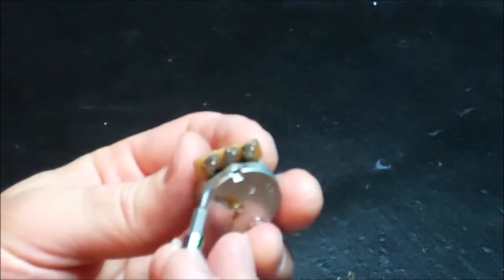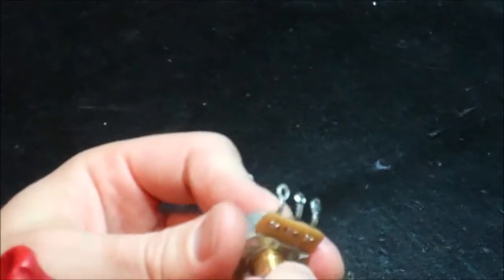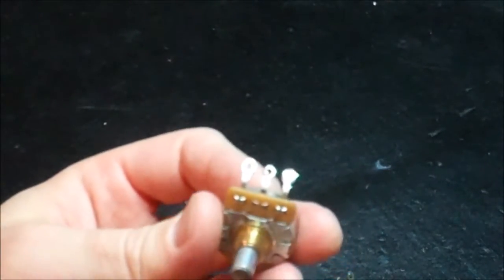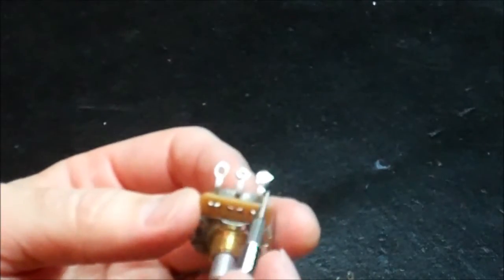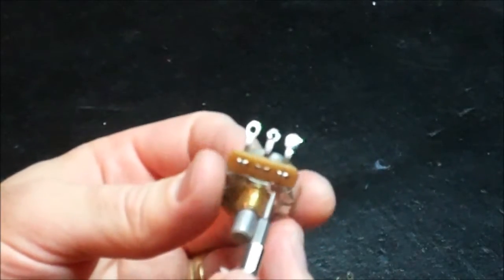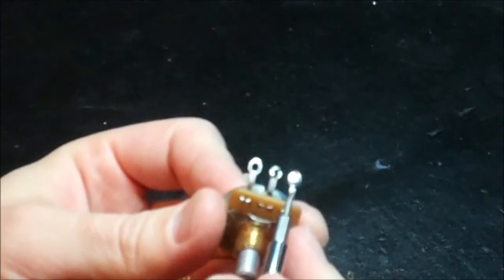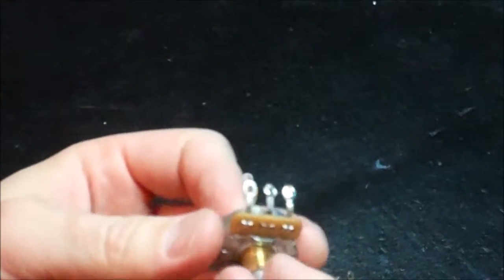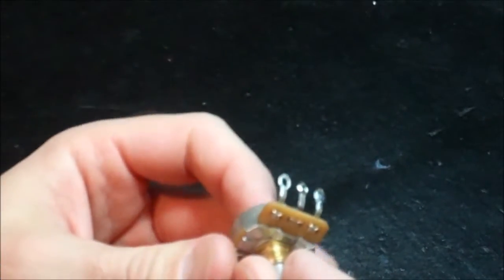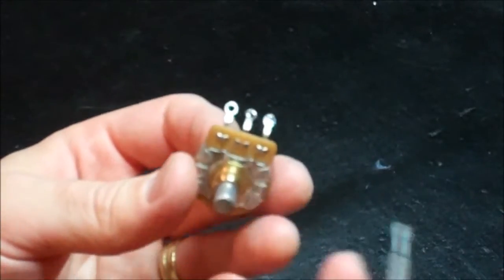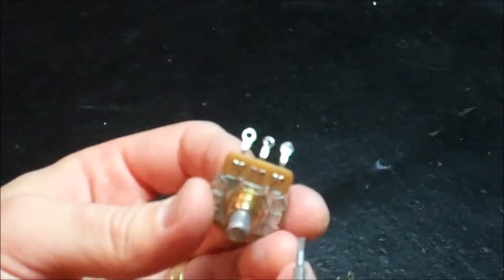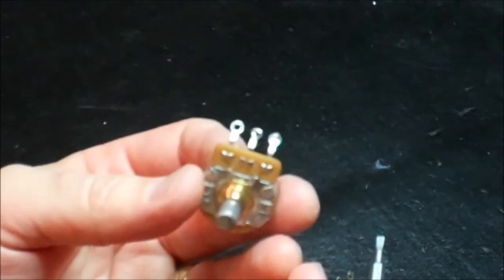So what the no-load does is, when you get all the way clockwise and you drop into that detent, this actually becomes an open circuit. Instead of going to the full 250K or 500K or whatever it is of the pot, it actually disconnects this and takes that capacitor and the resistor of the pot out of the circuit entirely, takes the load off of your pickups, and gives you a little bit brighter tone.